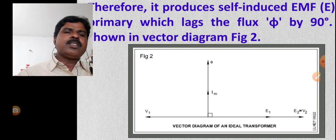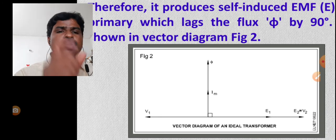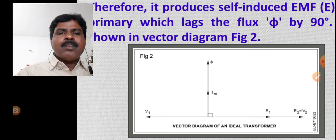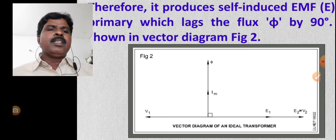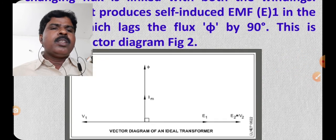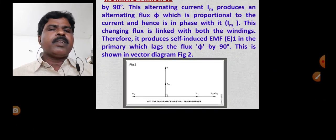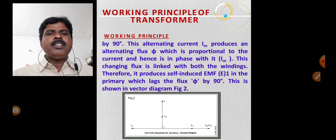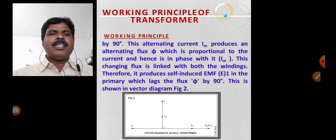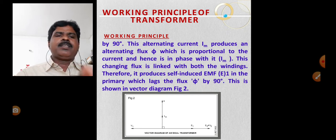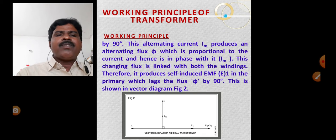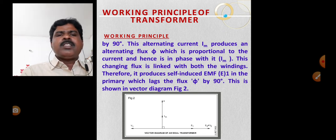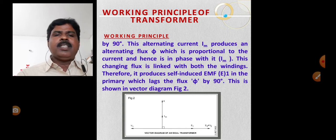Both the flux and magnetizing current lag V1 by 90 degrees. This changing flux is linked with both the windings — primary as well as secondary.